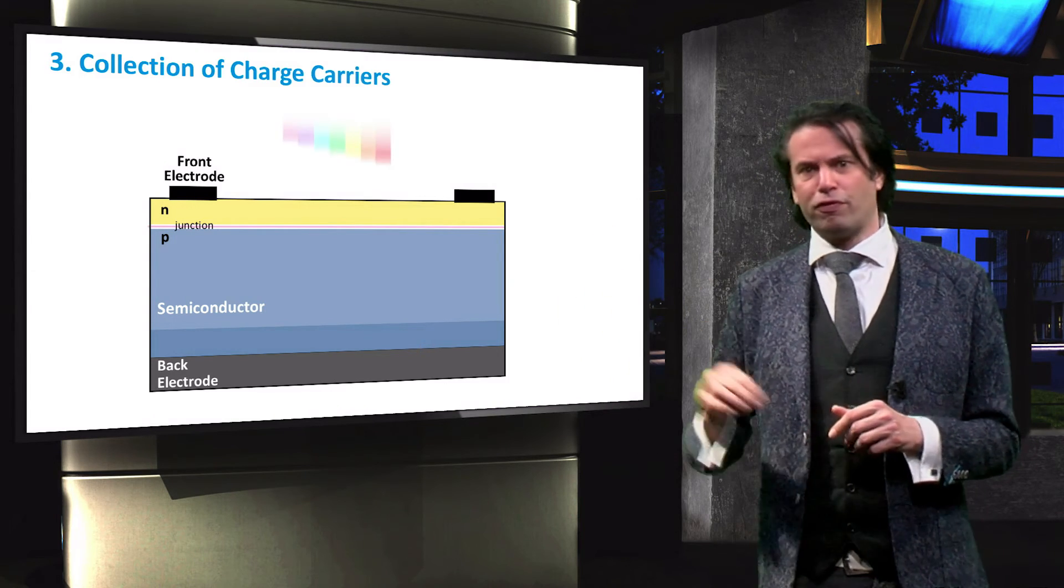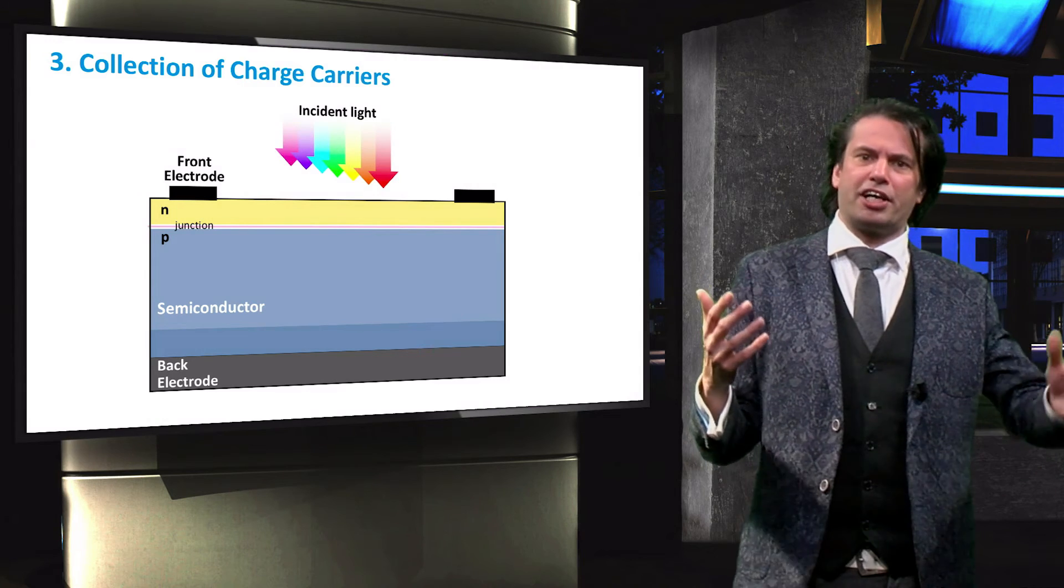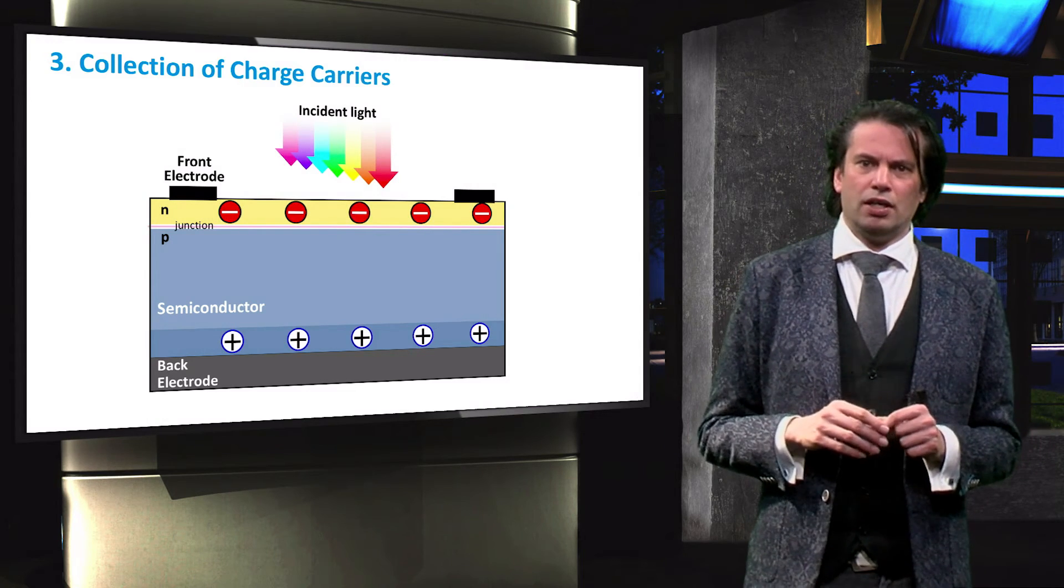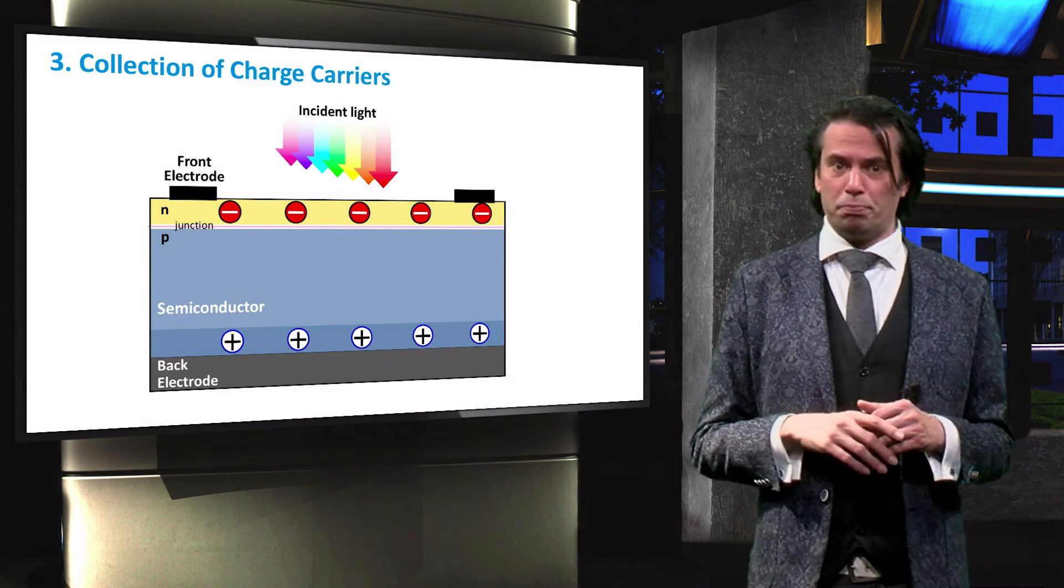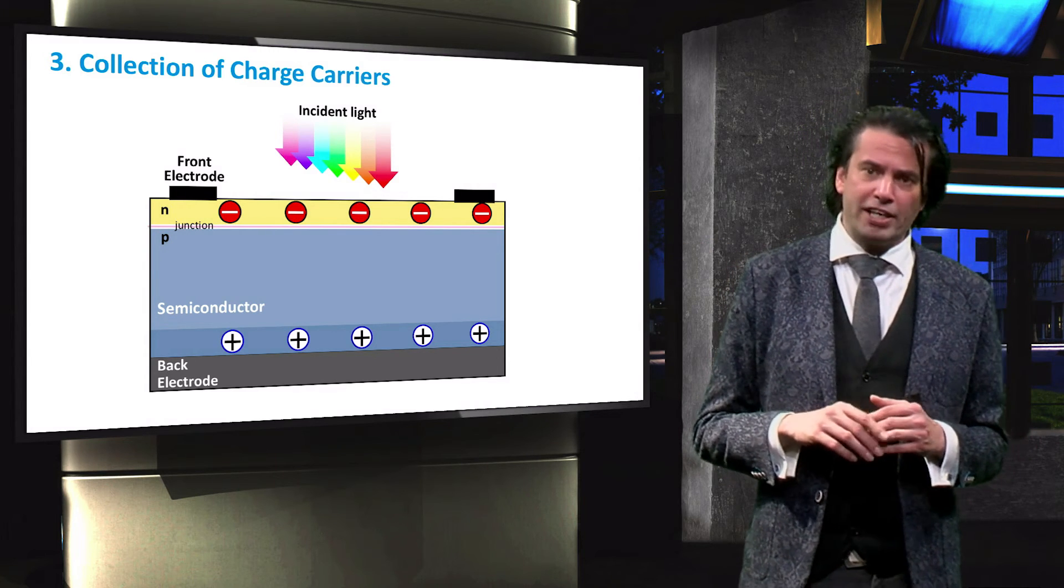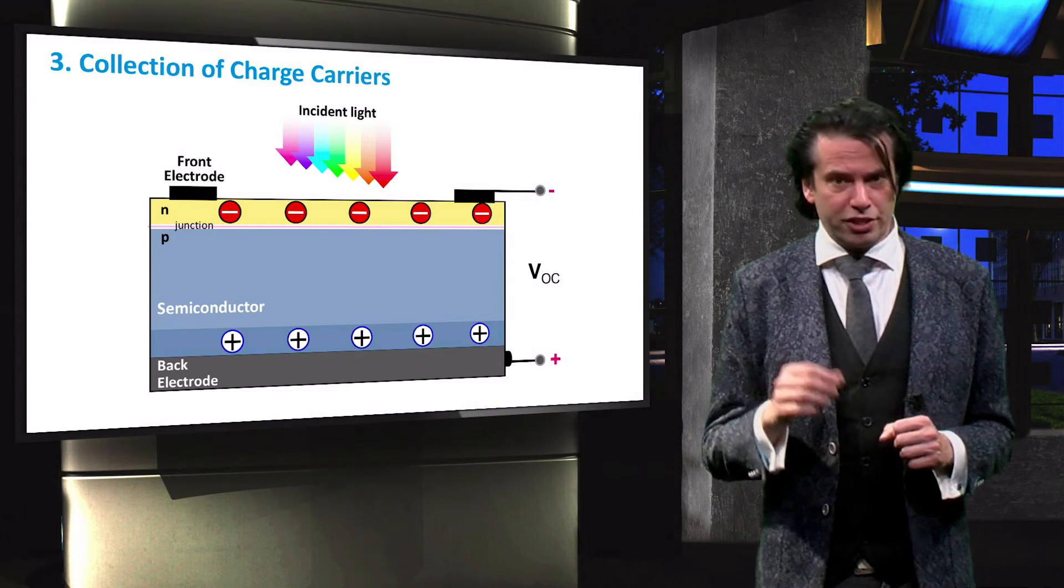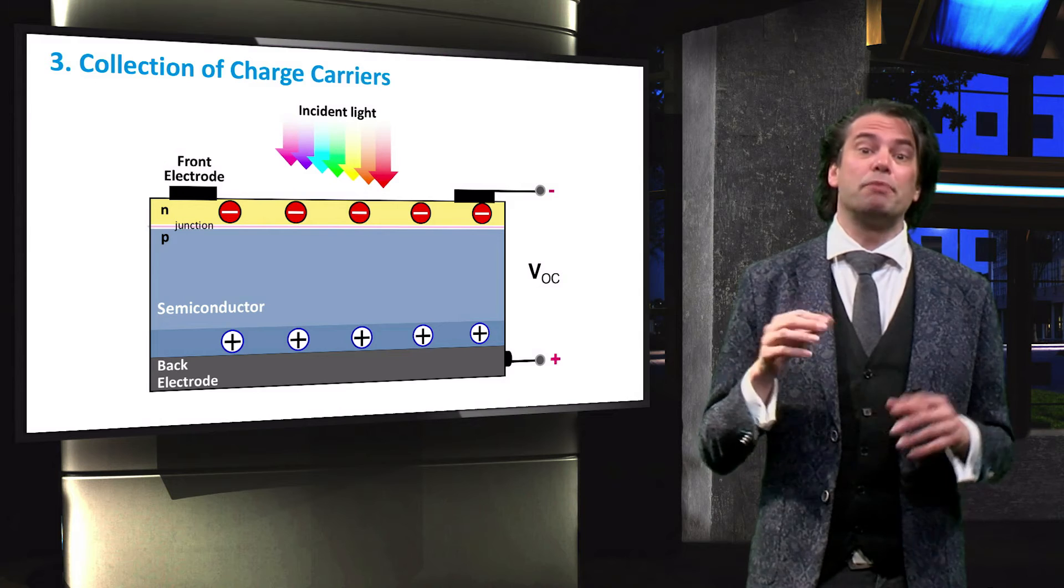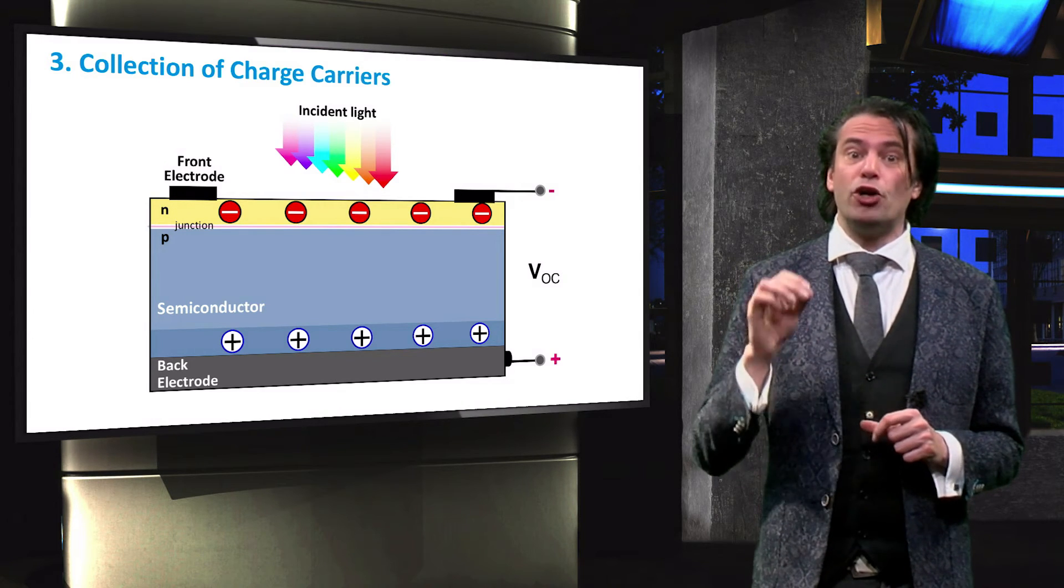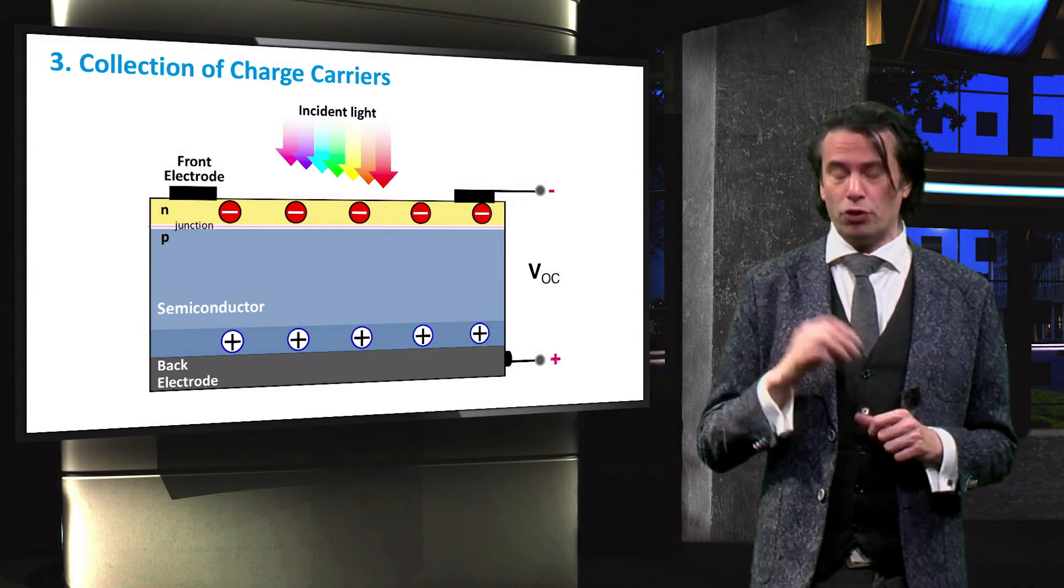On the influence of light, a large number of charge carriers are generated and separated. The difference in charge carrier concentration at both ends of the PV device causes a potential difference between the electrodes. This potential can be measured by a voltmeter and is called the open circuit voltage or VOC.